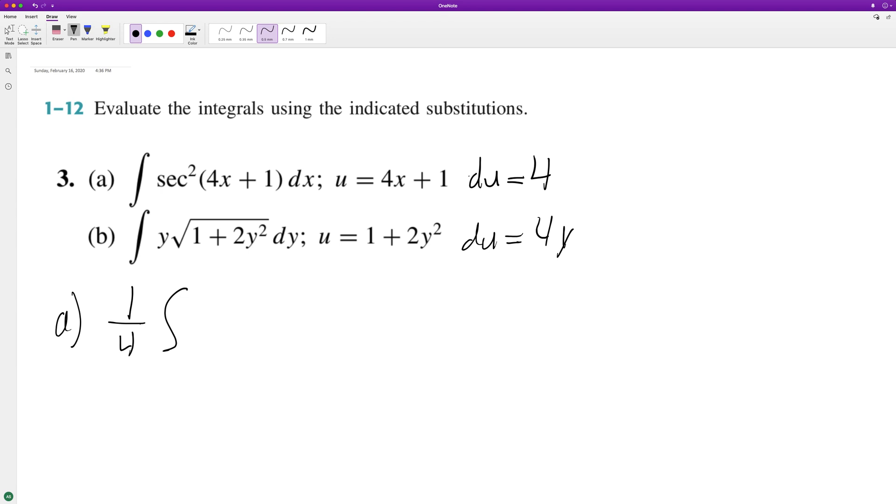Because we only have dx out here, we don't have a four. That's why secant squared u, which is the four x plus one. The integral of secant squared is tangent, so when we integrate this we end up with one fourth tangent u plus c.